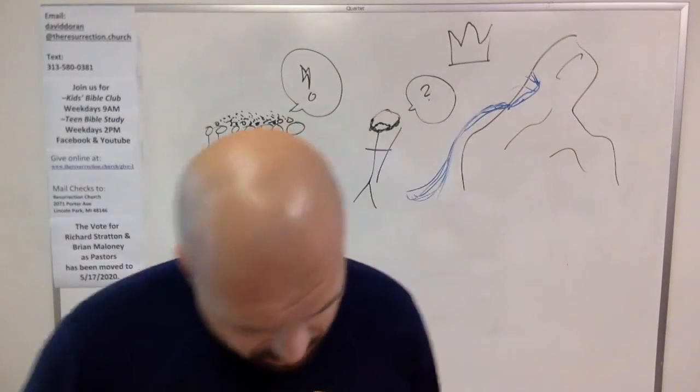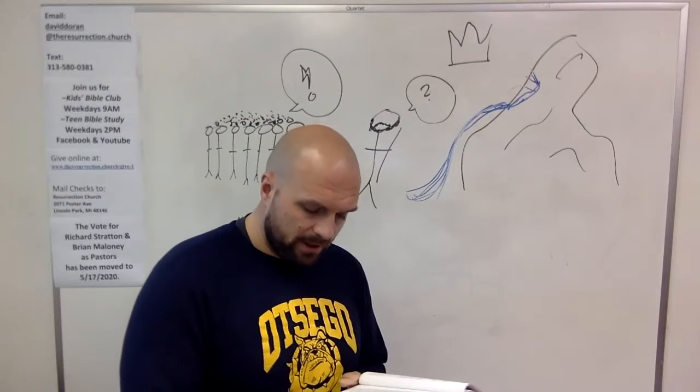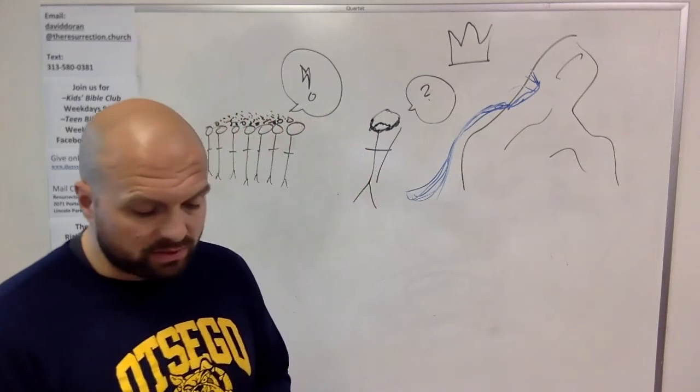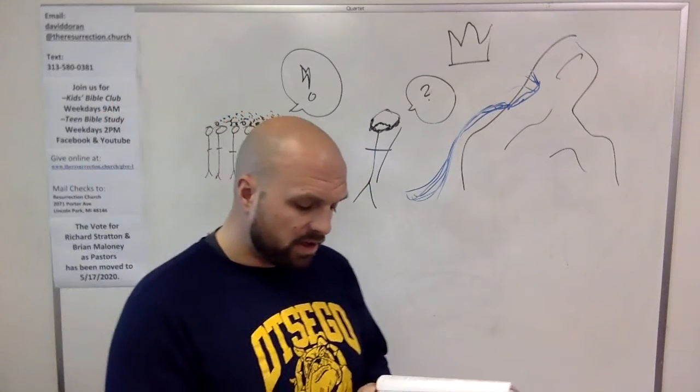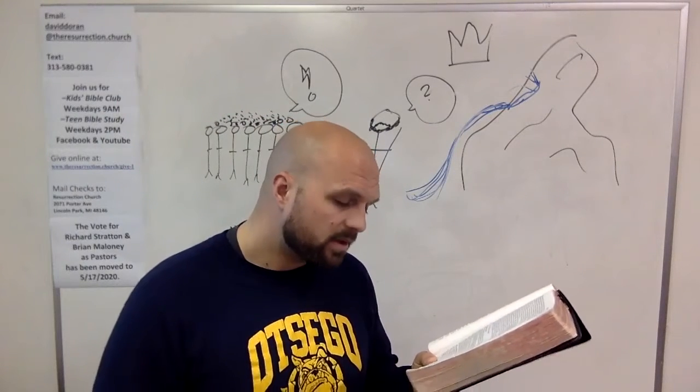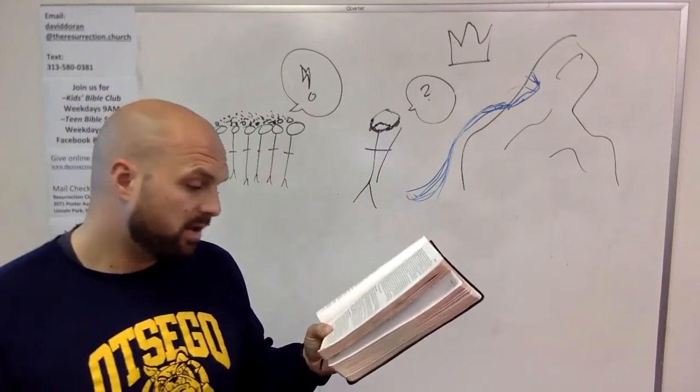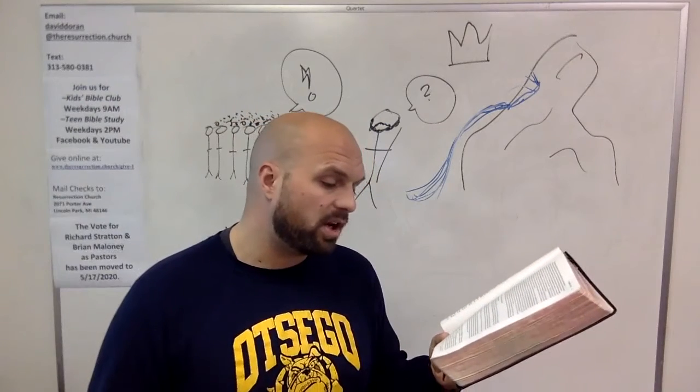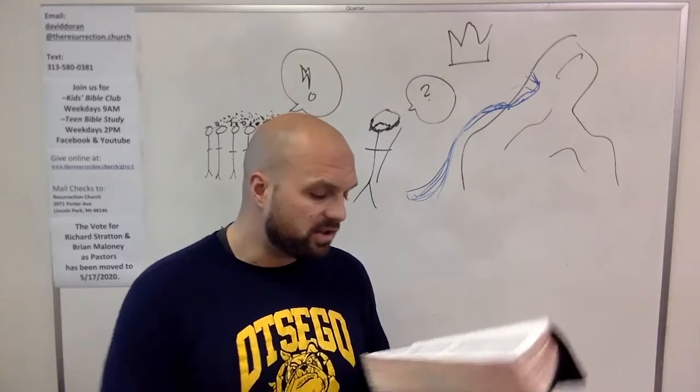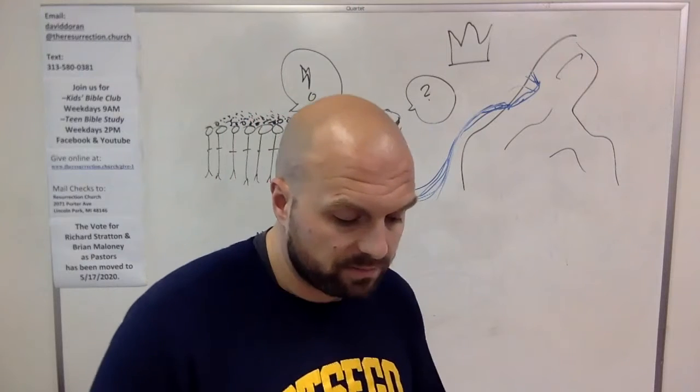There's going to be another enemy that tests them. And it says this, the Amalekites, that's a group of people, came and attacked the Israelites there. And Moses said to Joshua, choose some of your men and go fight the Amalekites. Tomorrow I will stand on top of the hill with the staff of God in my hands. So Joshua fought the Amalekites as Moses ordered. As long as Moses held his hands up, the Israelites were winning. Whenever he lowered his hands, the Amalekites were winning. So when Moses's hands grew tired, they took a stone and put it under him and he sat on it. Aaron and Hur held his hands up on one side and on the other. So that his hands remained steady till sunset. So Joshua overcame the Amalekite army with a sword.